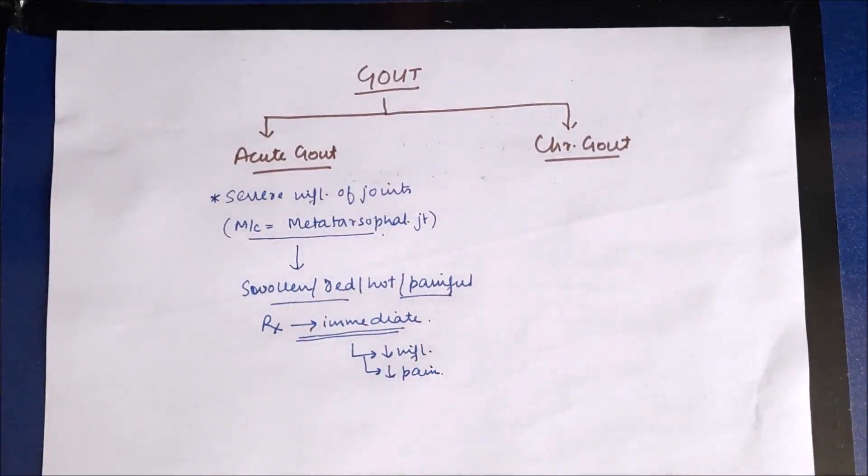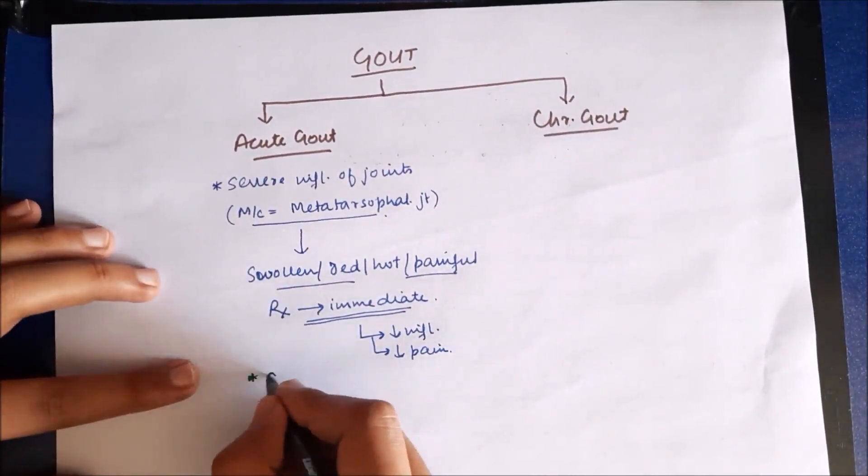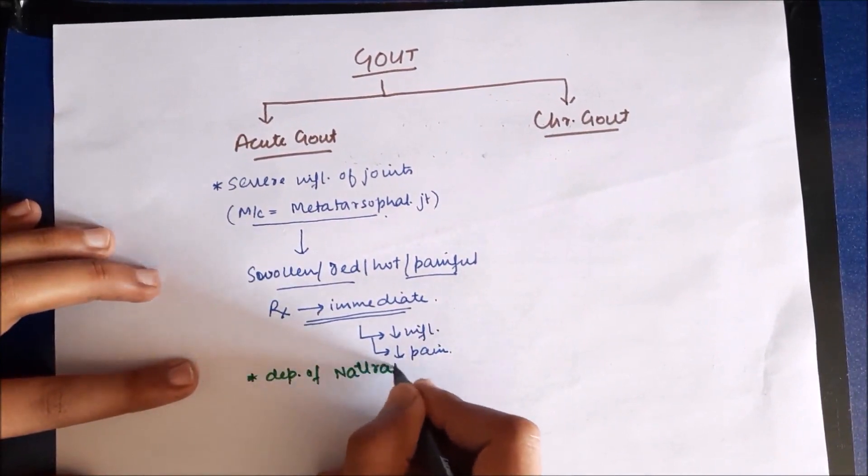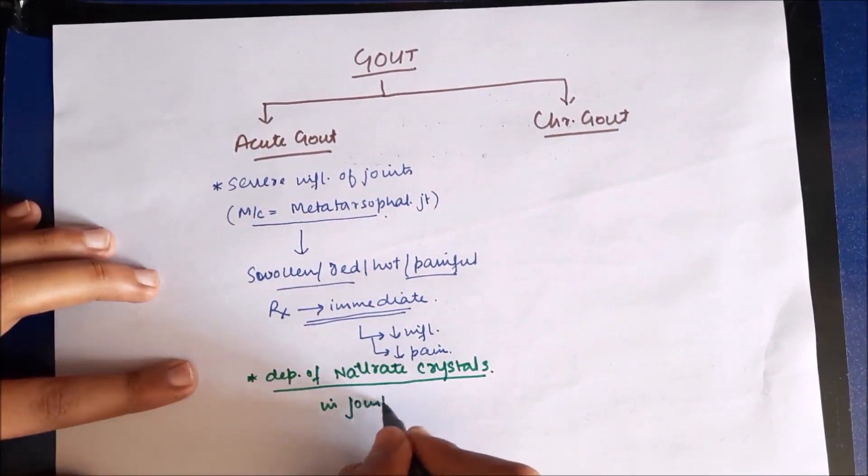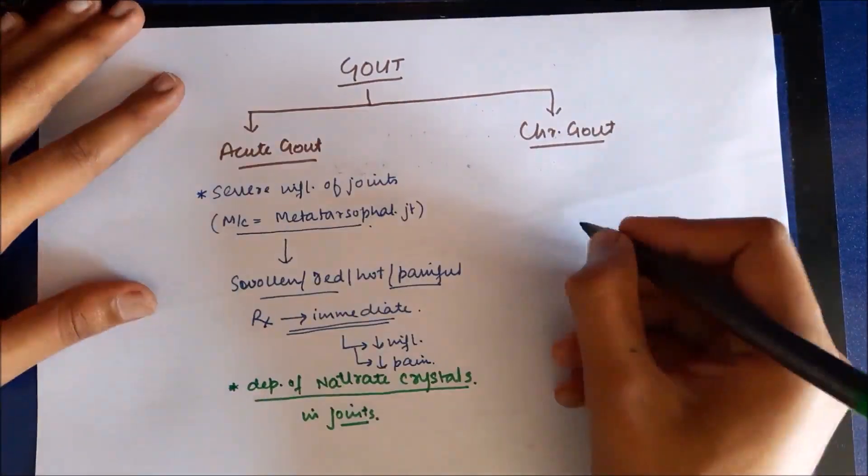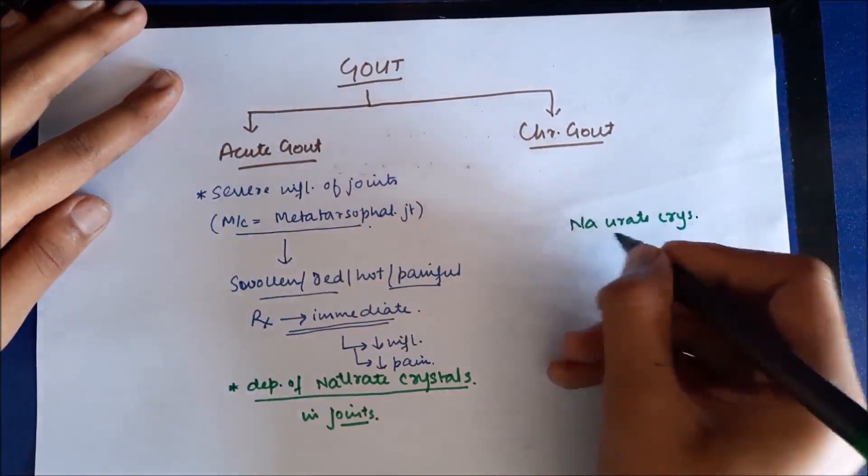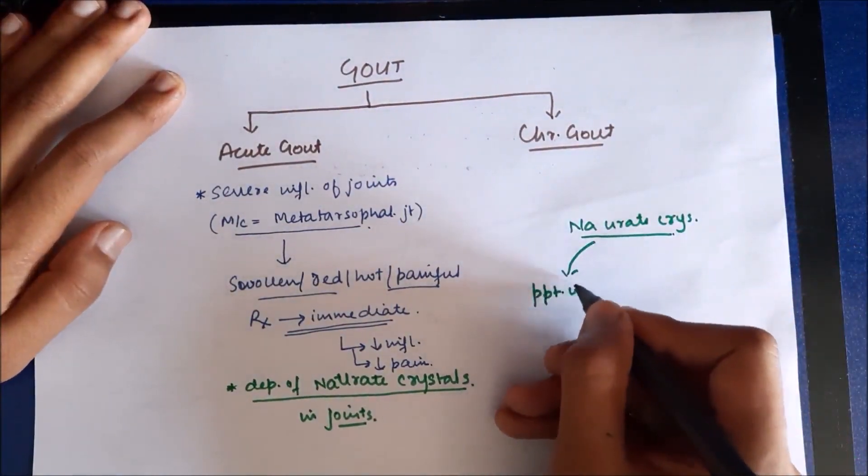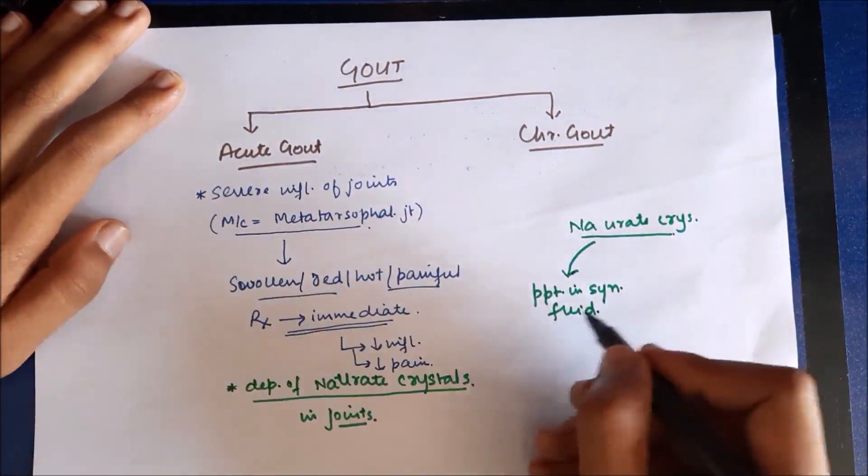Now let us discuss the treatment of acute gout. First of all, we should know about the pathophysiology. Basically, there is deposition of monosodium urate crystals in joints. These monosodium urate crystals, once they get deposited in the joints, precipitate in synovial fluid, and these crystals are taken up by synovial cells which cause inflammation of the joint by release of chemotactic substances such as interleukin-2 and leukotriene B4.